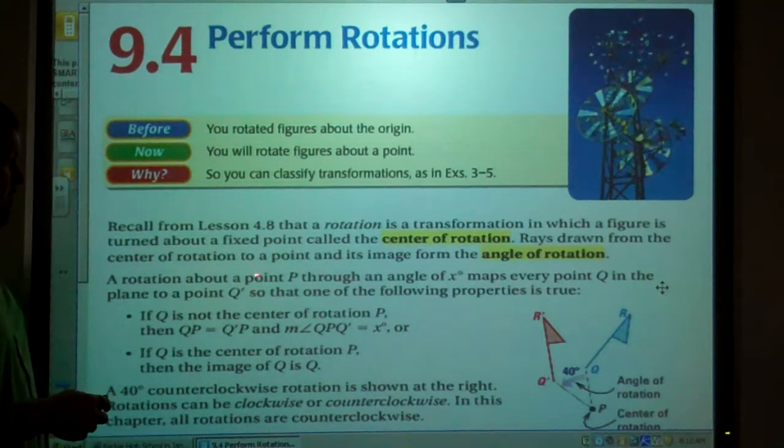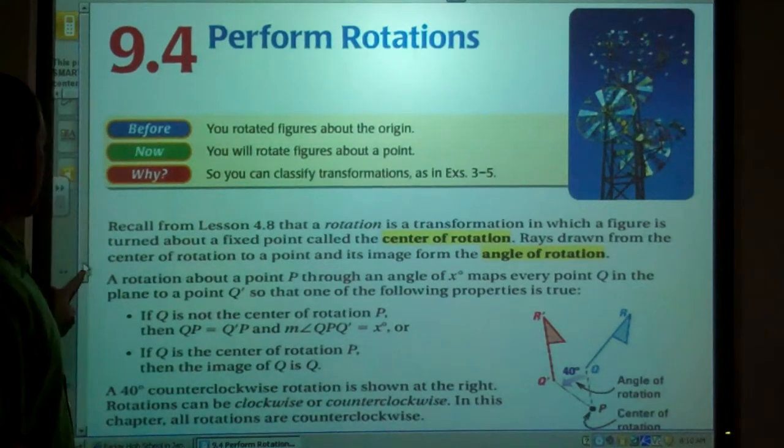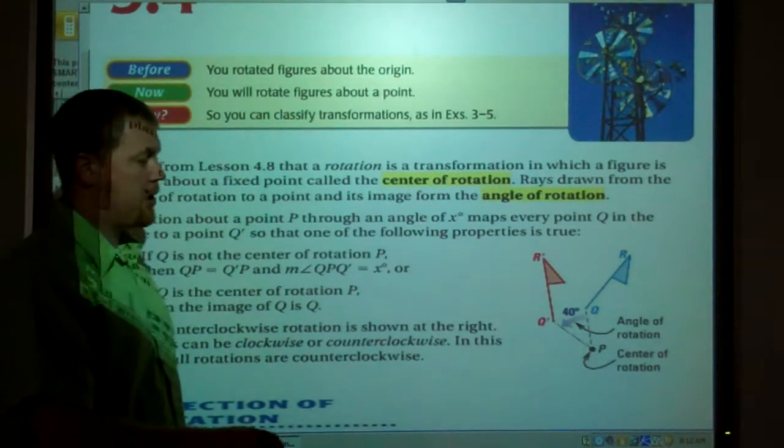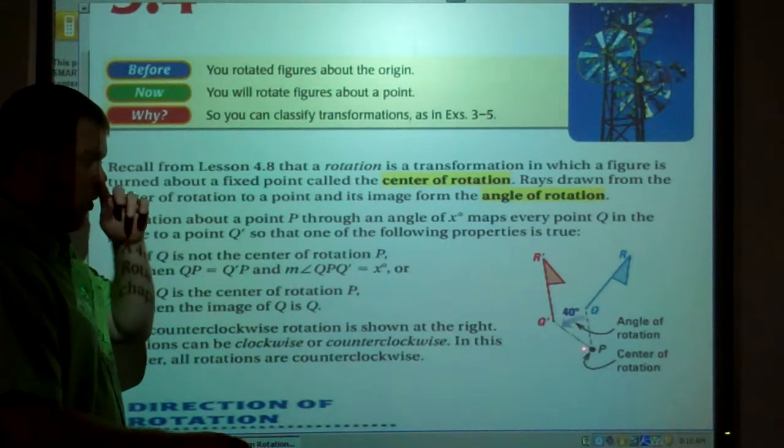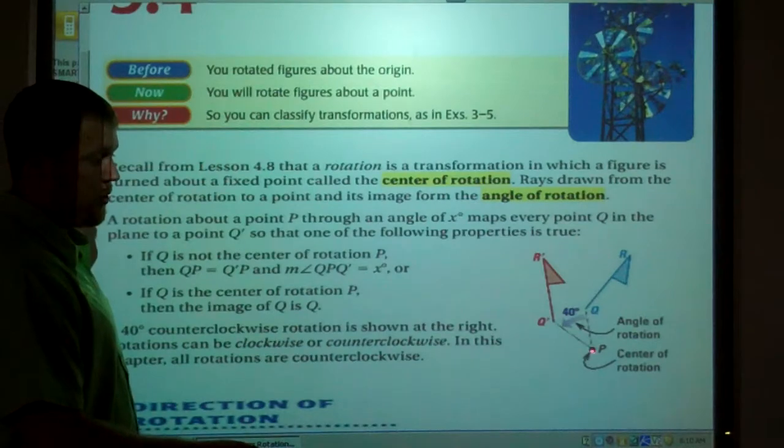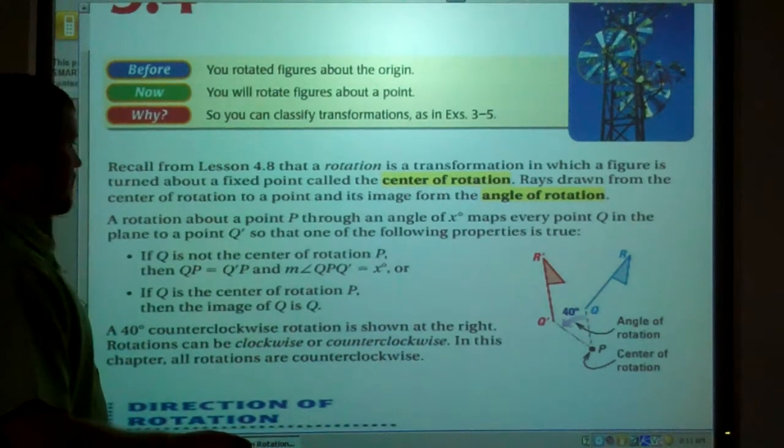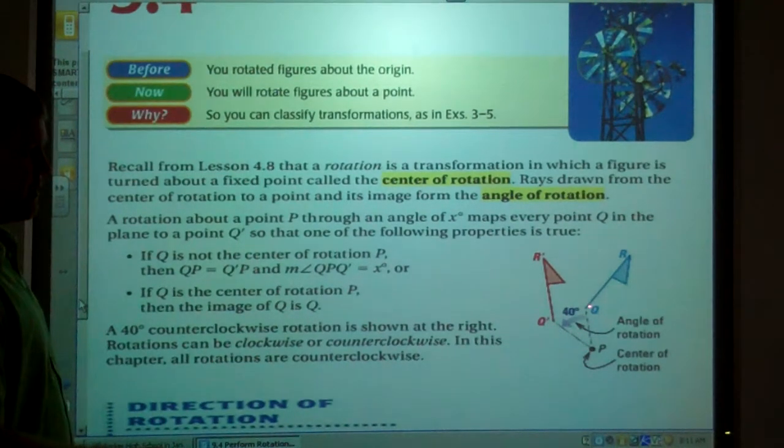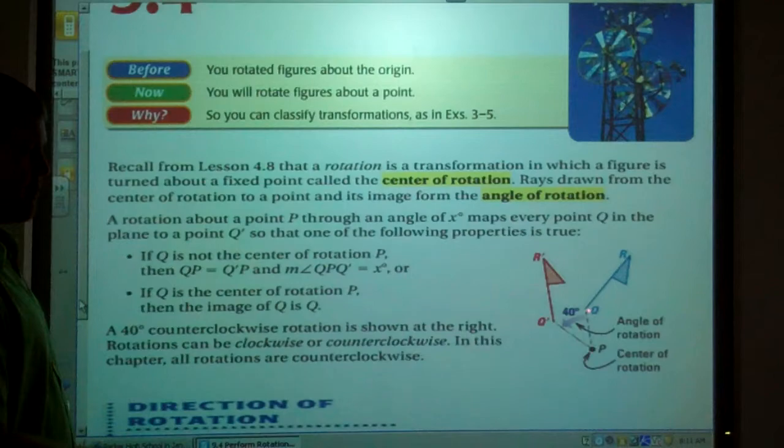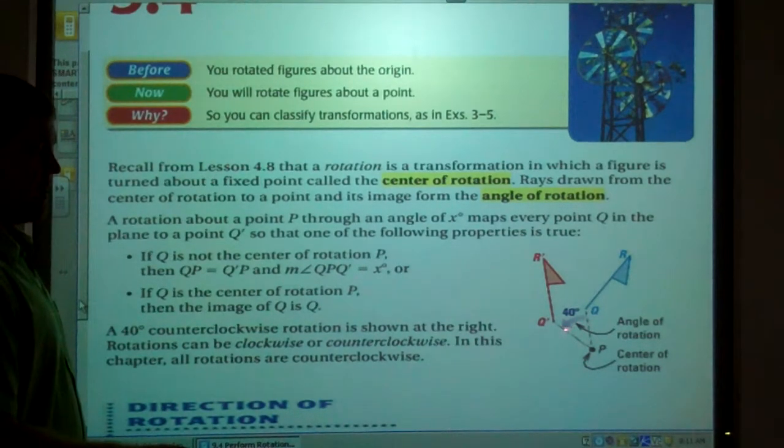Rays drawn from the center of rotation to a point and its image form the angle of rotation, like in this diagram here. From the point that you are rotating it on, whether it's the origin or some other random point, the ray is drawn from that point to your original figure and your image. They make the angle of rotation.